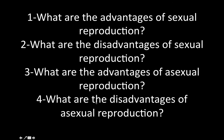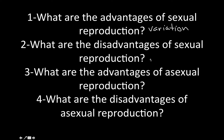The advantages of sexual reproduction include creating variation in the population, so not every individual is exactly the same. The disadvantage is that one individual can't contribute as many genes to the gene pool as asexual reproducers can. Asexual reproducers are exact clones, which makes finding matches for transplants — whether a kidney, heart, or otherwise — much easier. With sexual reproduction, all that genetic variation makes finding a match much more difficult.